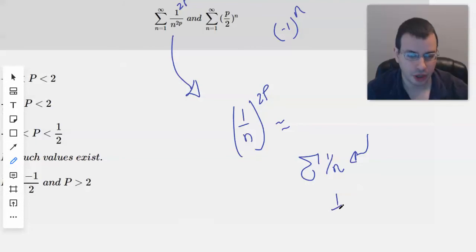But 1 over N to the 1.1, just anything slightly larger than 1 will converge. So 1 over N, the harmonic series is kind of like the barrier between converging and diverging. So like 1 over N to the 1 half diverges. 1 over N diverges. 1 over N to the 1.1 converges.